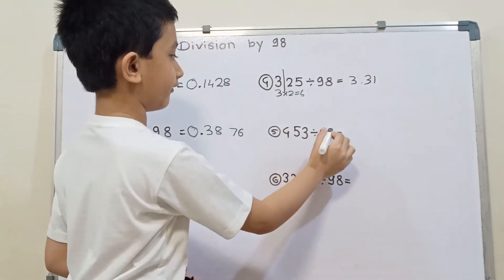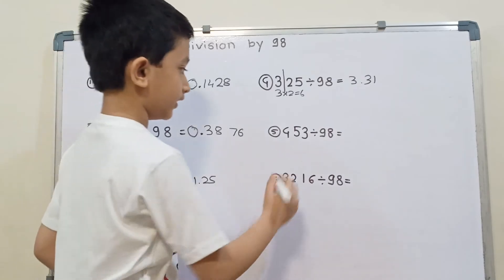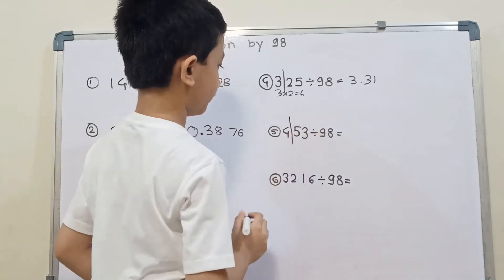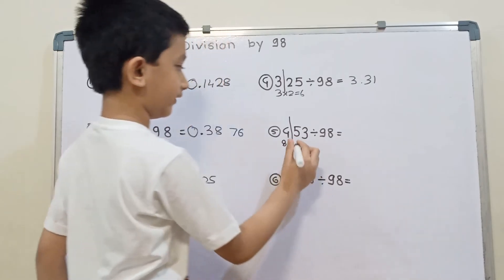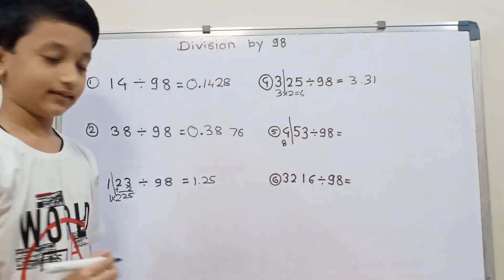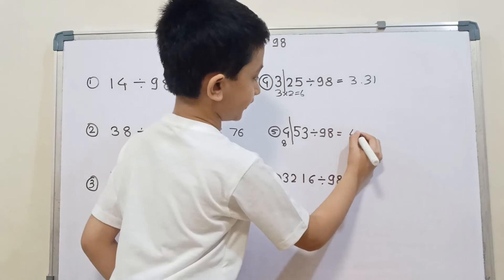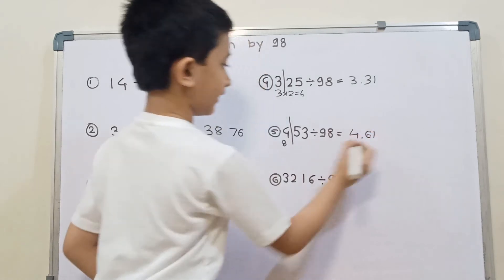Then 453 divided by 98. First we will divide it into 2 parts. Then 4 times 2 is 8. And then 53 plus 8 that is 61. So the answer is 4.61.